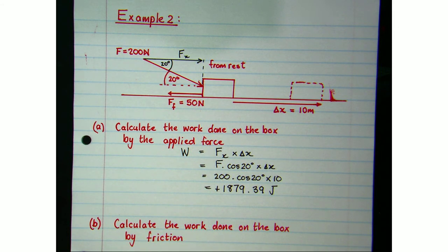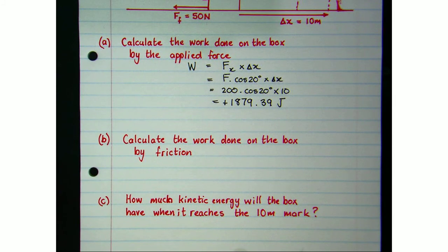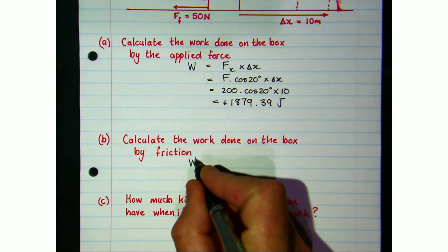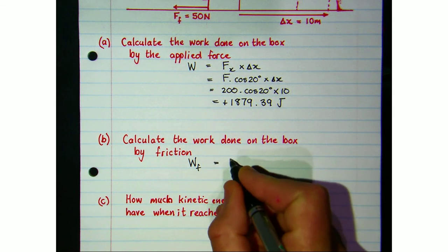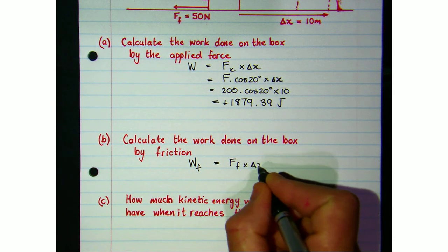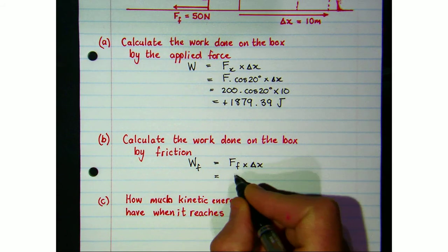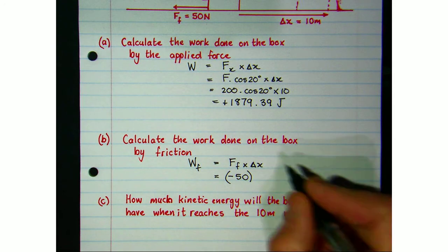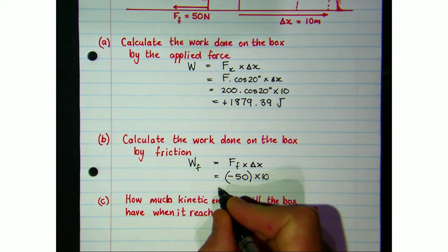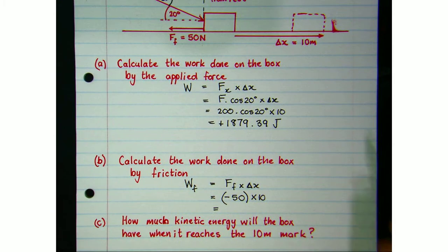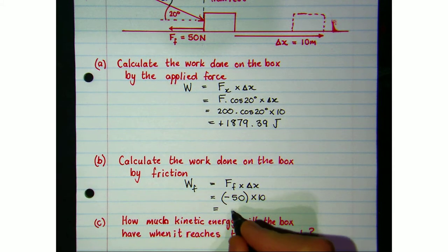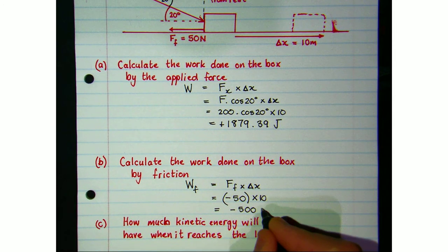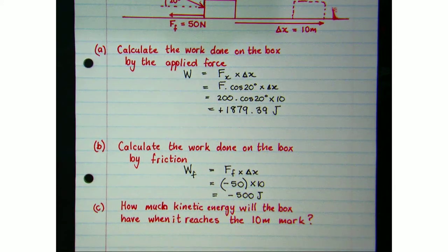At the same time, friction is removing energy from the box. Friction is already parallel to the displacement, so we use it as is. The work done by friction equals the frictional force multiplied by the displacement: negative 50 newtons — taking rightward as positive, friction acts to the left — over 10 meters. So while the box slides 10 meters to the right, 500 joules of energy is removed by friction.